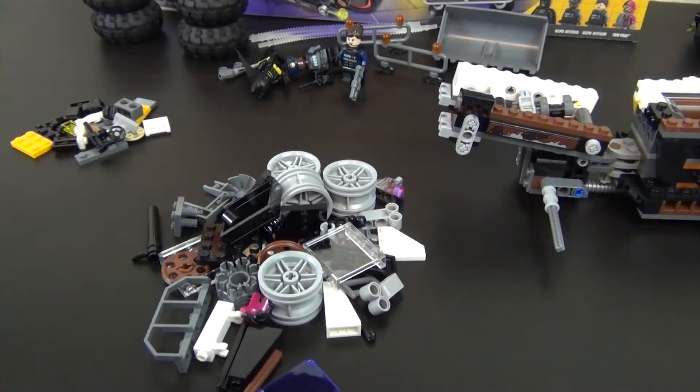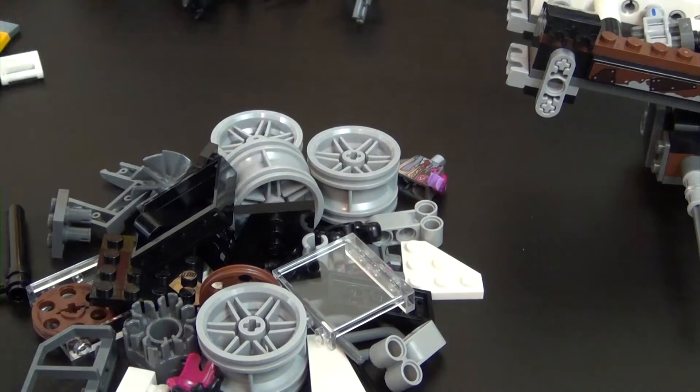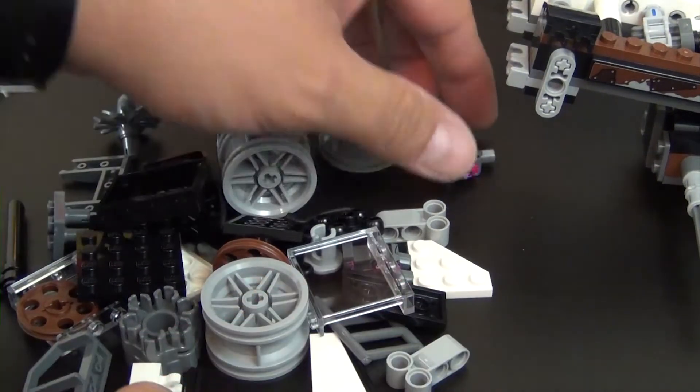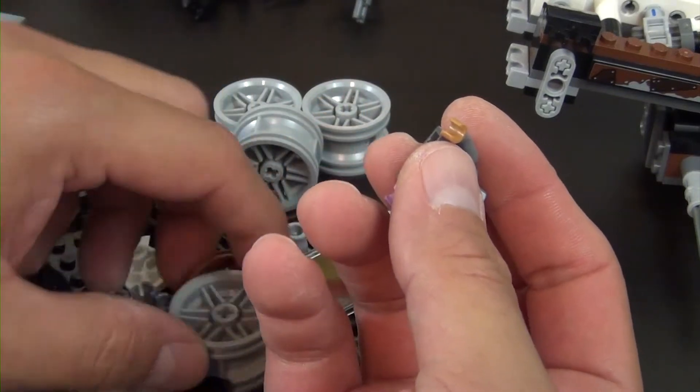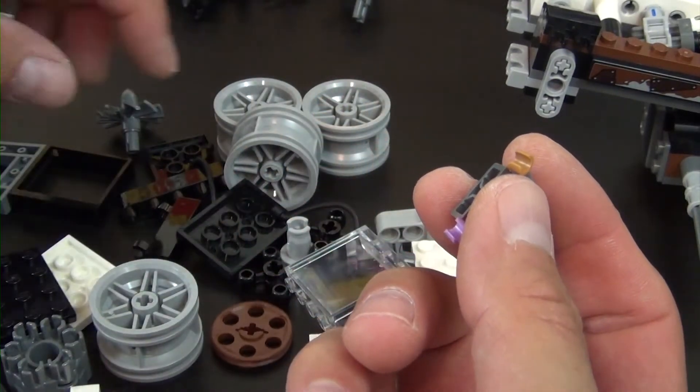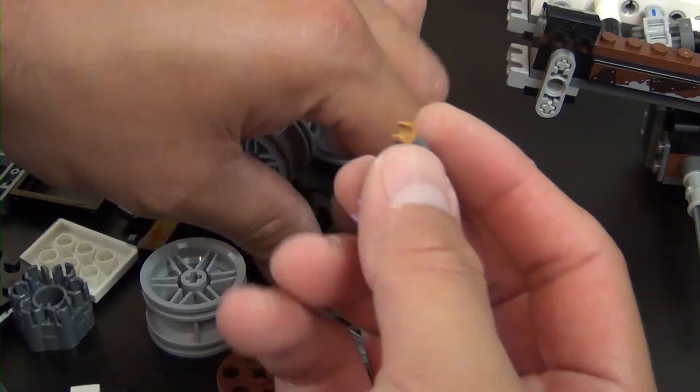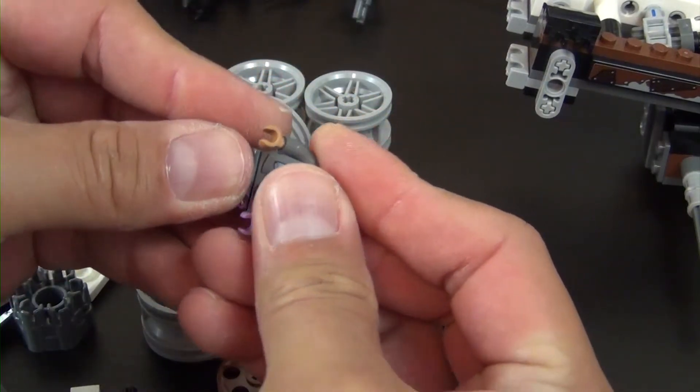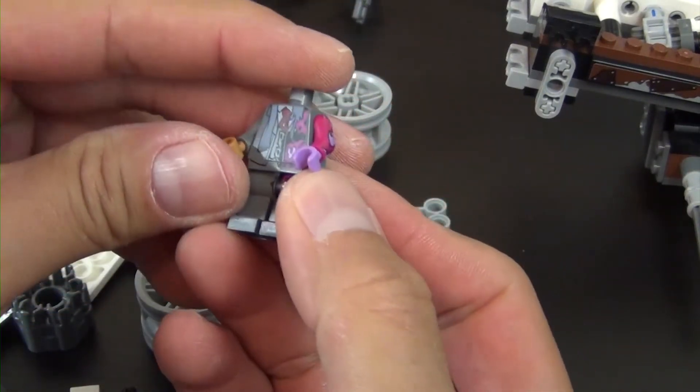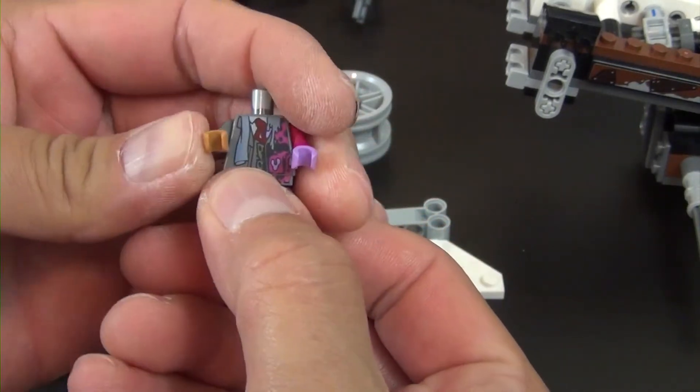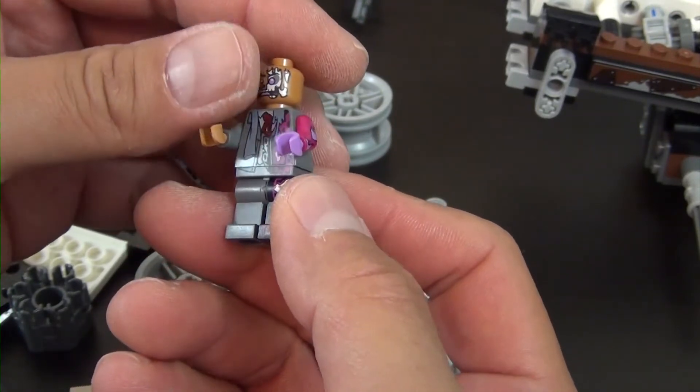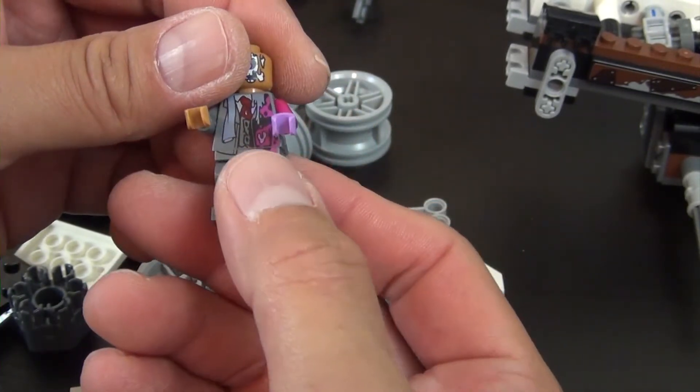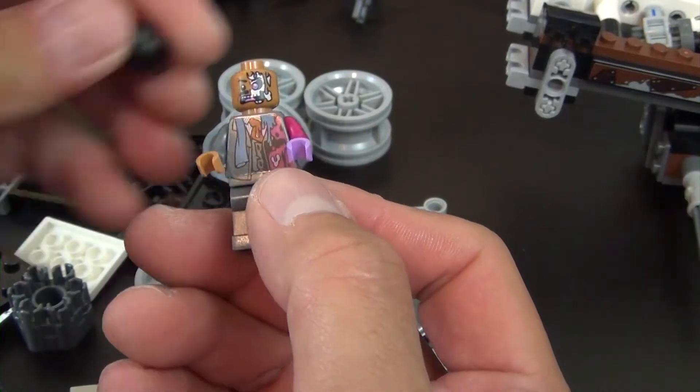All right, we have everything for our final bag out ready to go. We have our final minifigure and it is Two-Face. So we wait until the very end to build the main character for the set. So pretty simple as far as construction of the minifigure - it's just head, torso, legs, and the hair piece.